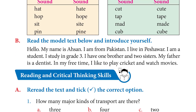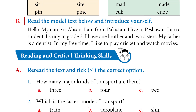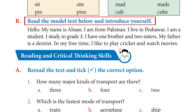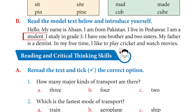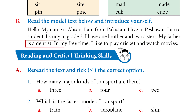Now let's look at question B: Read the model text below and introduce yourself. First you have to use this model or sample text. Hello, my name is Aisin. I am from Pakistan. I live in Peshawar. I am a student. I am in grade 3. I have one brother and two sisters. My father is a dentist. In my free time, I like to play cricket and watch movies.